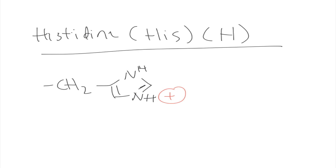So those are the 20 amino acids classified based on polarity and charge. Thank you for watching — if you liked it and found it useful, please give it a like and subscribe if you want to see more videos like this one. If you have any questions, don't hesitate to leave them in the comment section below.